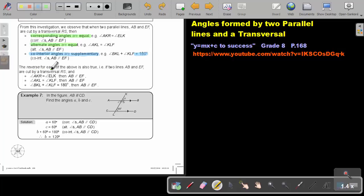The reverse for each of these is also true. If two lines AB and EF are cut by a transversal RS, if the corresponding angles are equal, then the lines will be parallel. If the alternate angles are equal, then the lines will be parallel. And if the co-interior angles add up to 180 degrees, then the lines will be parallel.